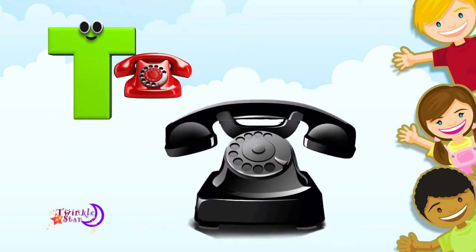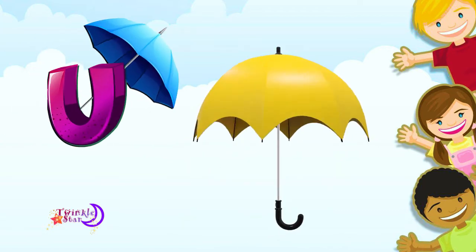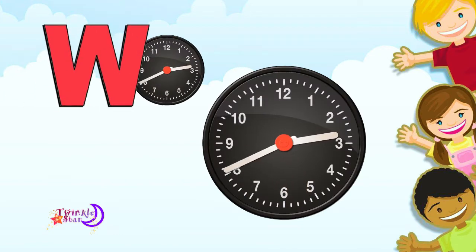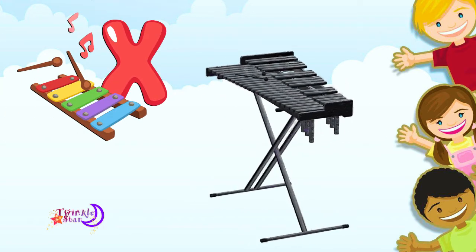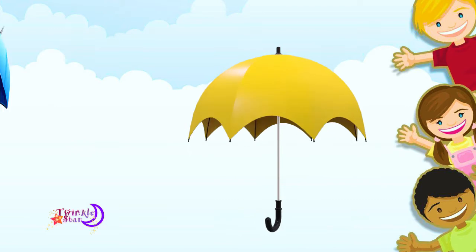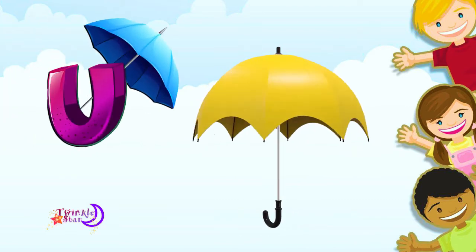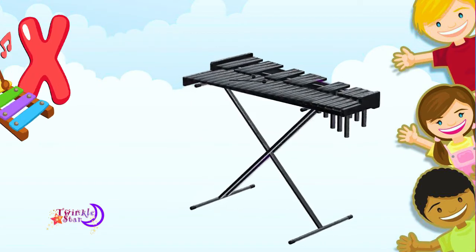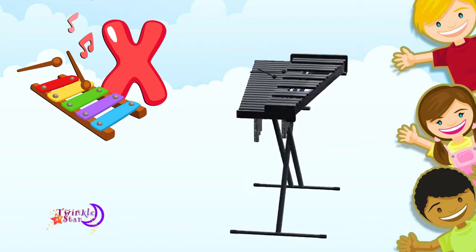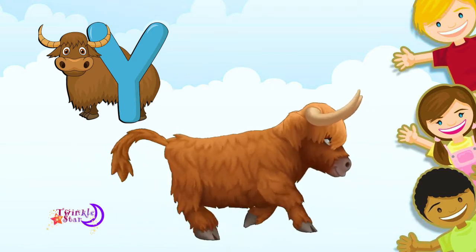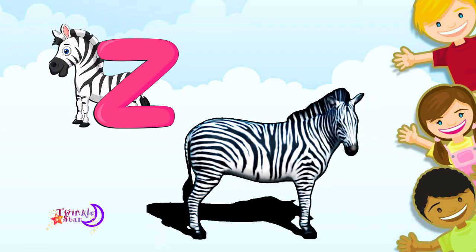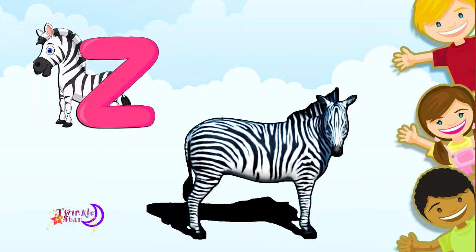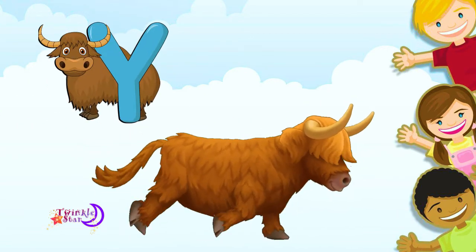U for umbrella, V for van, W for watch, X for xylophone, Y for yard, Z for zebra.